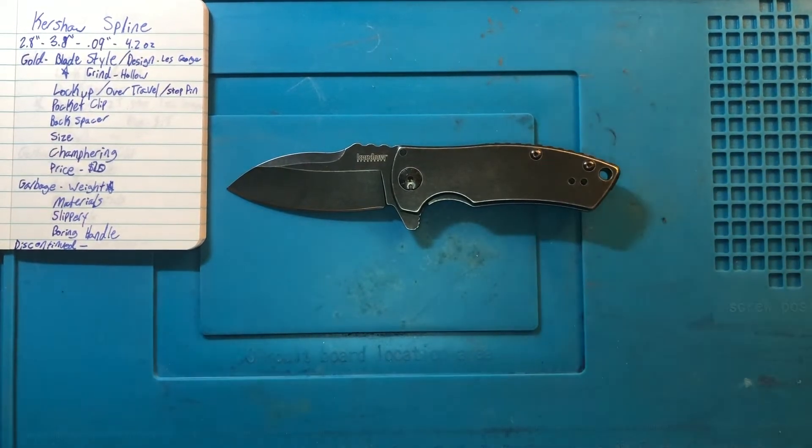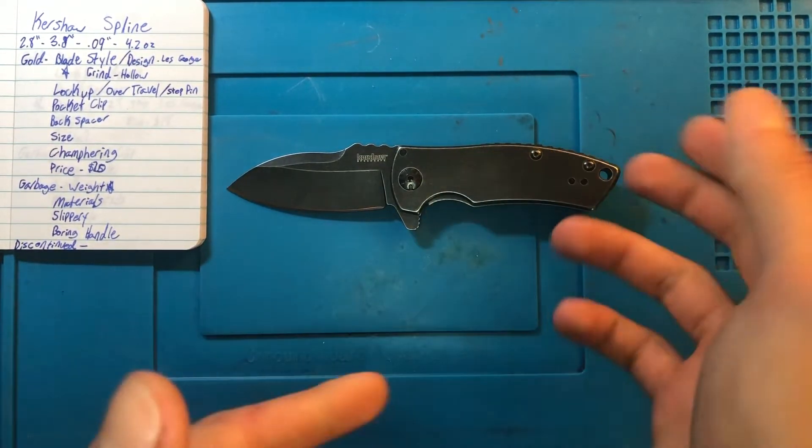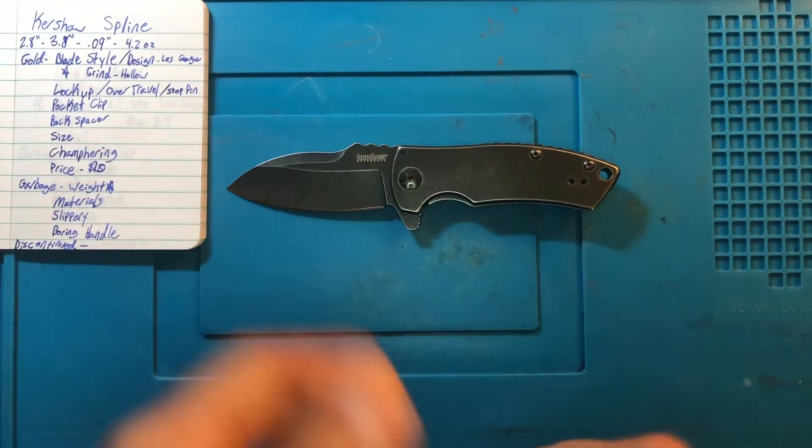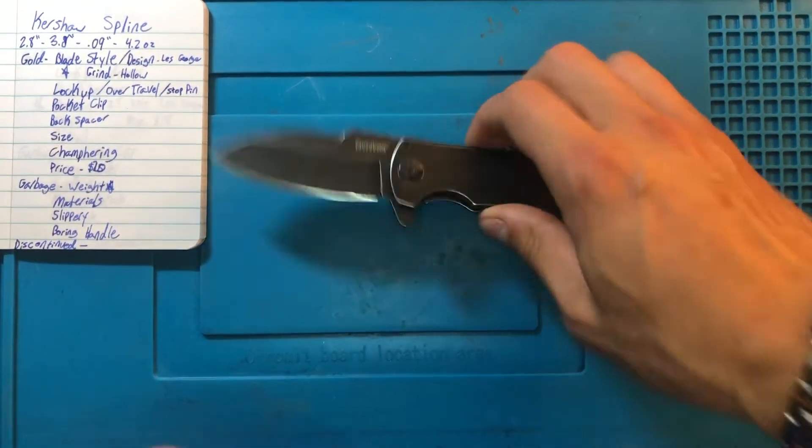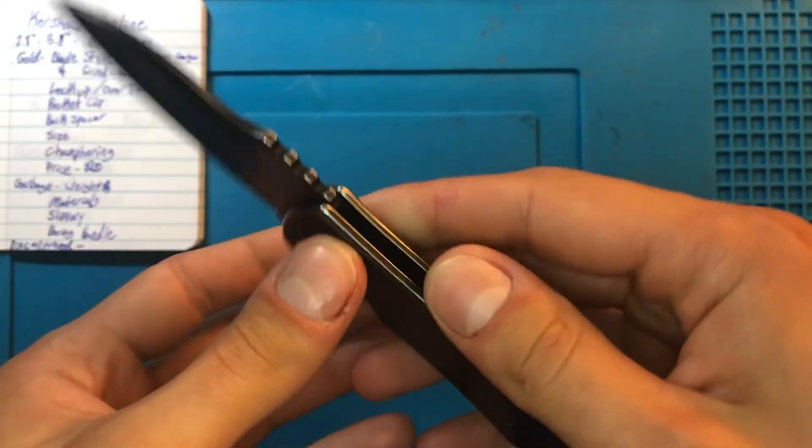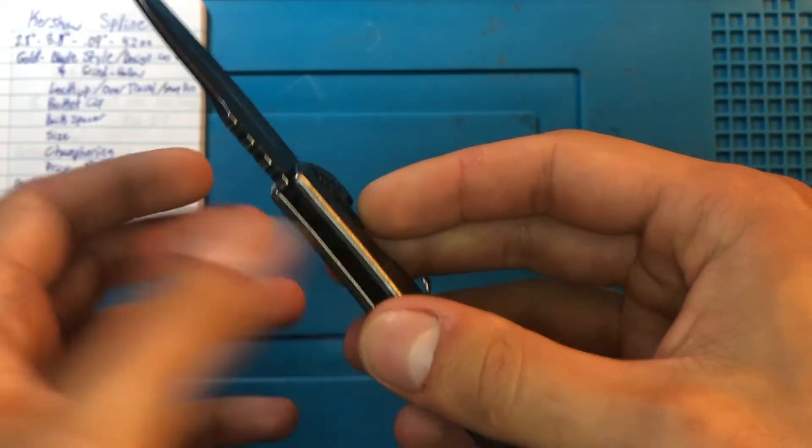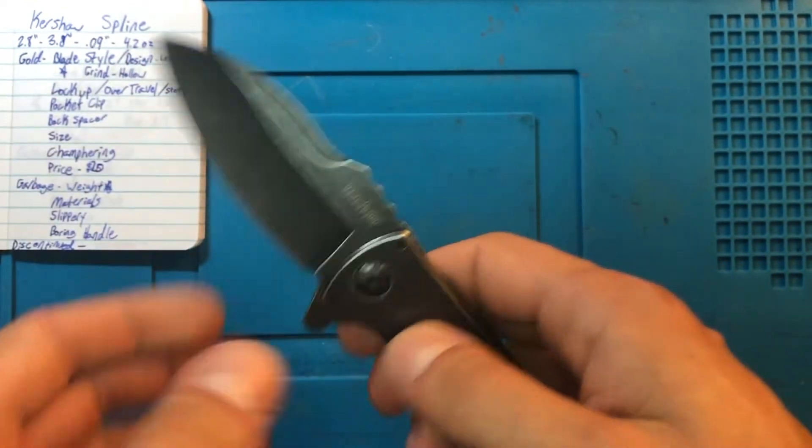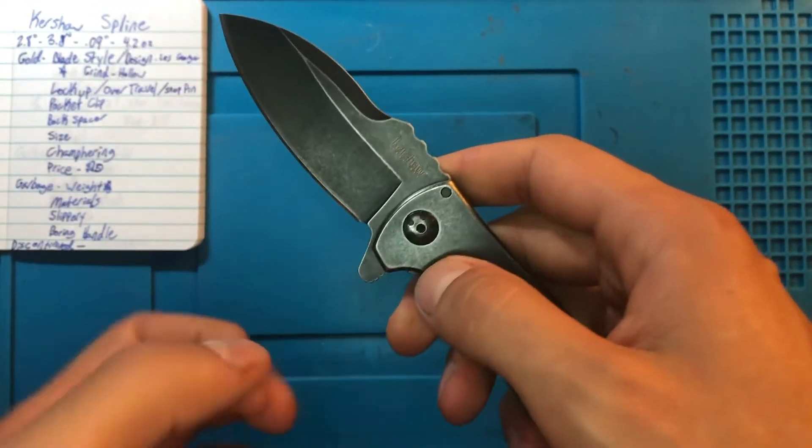One of the other gold nuggets here, and like I said, given its existence on a budget range, makes it all the more impressive is the chamfering. Obviously, you can't feel this, and I can't really show you, but there, other than the one, is not a sharp edge or corner on this whole thing.